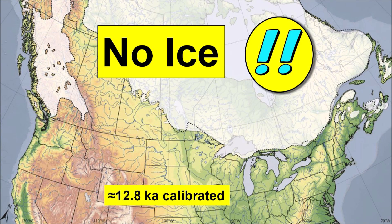Welcome to another presentation about the origin of the Carolina Bays. This presentation discusses one of the major problems faced by the Glacier Ice Impact Hypothesis, which proposes that the Carolina Bays were created by secondary impacts of glacier ice ejected by an extraterrestrial impact on the Laurentide Ice Sheet approximately 12,900 years ago.